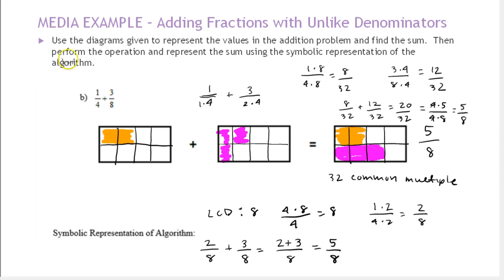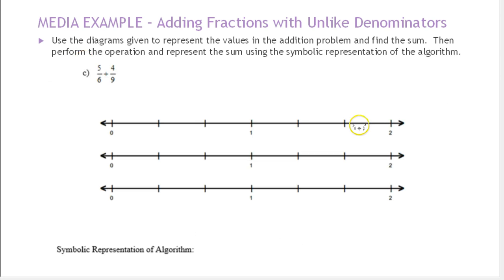So, in this case, one of the denominators was a multiple of another. In the last case, the two denominators didn't have any common factors, so we had to use their product. Now, we're going to look at one last example where they have a common factor that's greater than 1, but they're not multiples of each other.